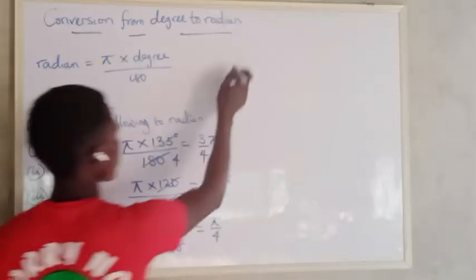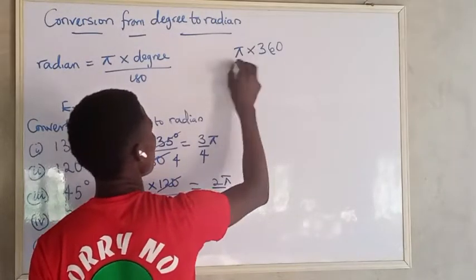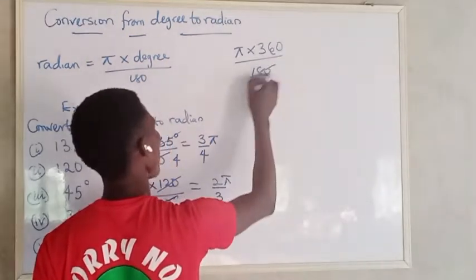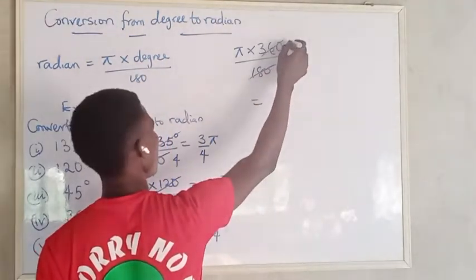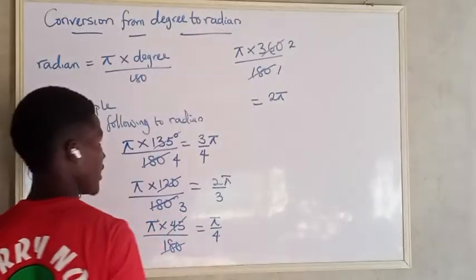Alright. So the next one we have 360. So that's pi multiplied by 360 all over 180. And that will be 180 here 1 and 180 here 2, so that's 2 pi.